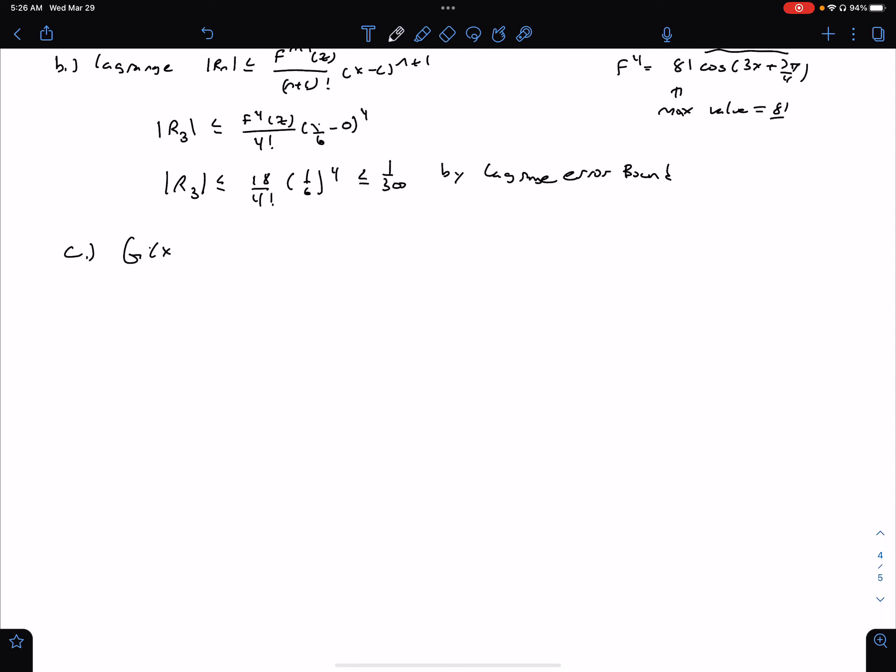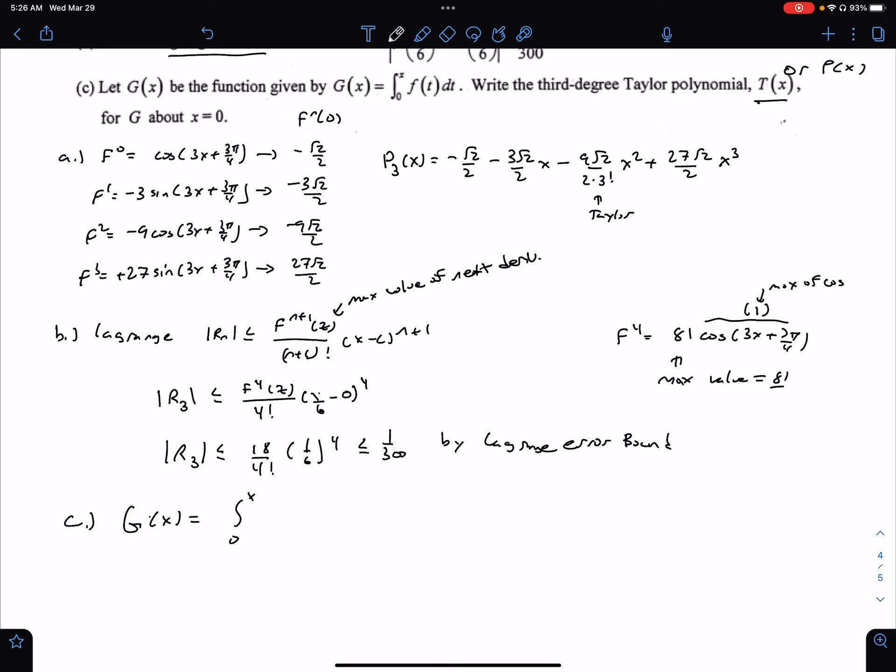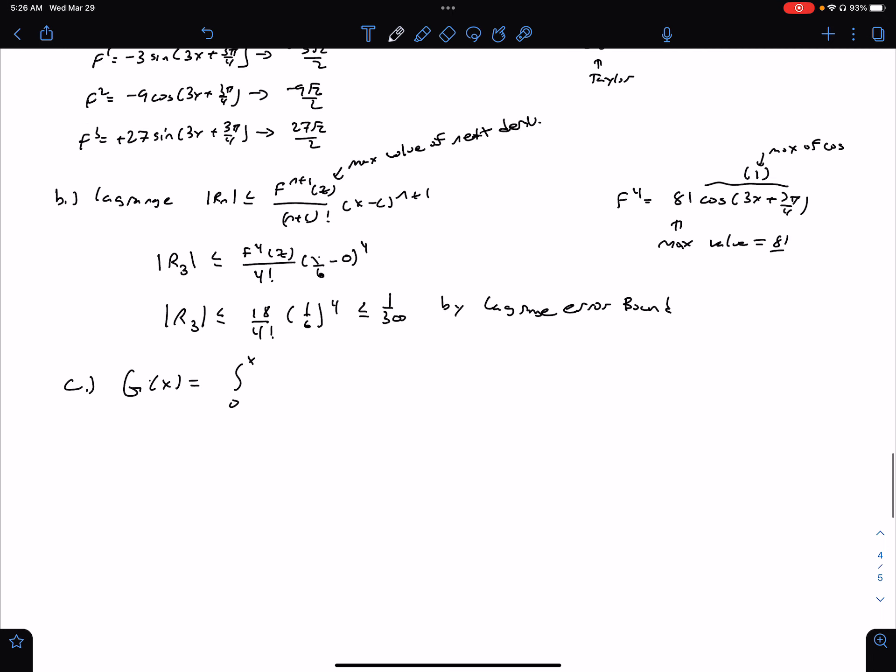So G(x) is the antiderivative of what we had here, from 0 to x. That's just a really fancy way of saying it. They just play, everywhere there's an x, they're just using the letter t here. That's it.